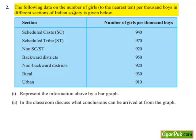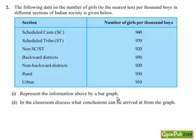The following data on the number of girls to the nearest 10 per thousand boys in different sections of Indian society is given below. The first part asks us to represent the information by a bar graph. So let's move on to the solution.